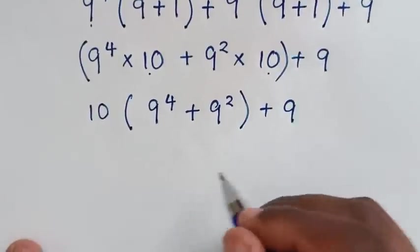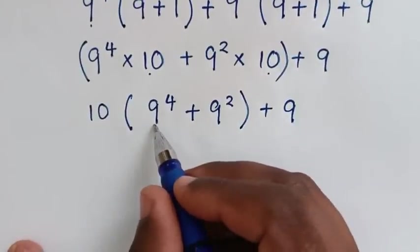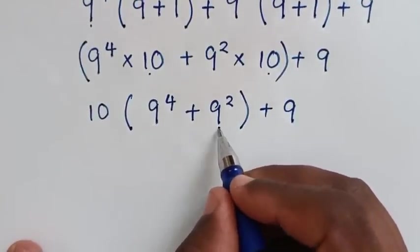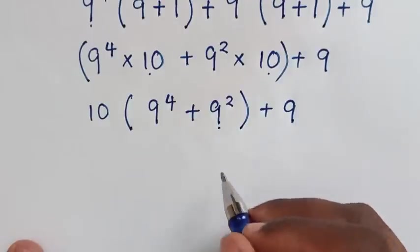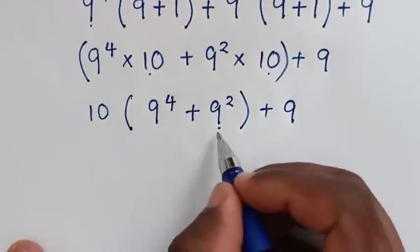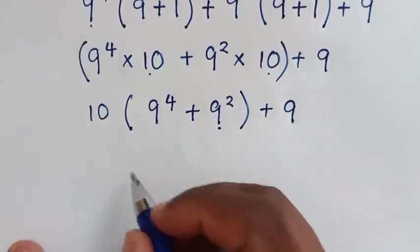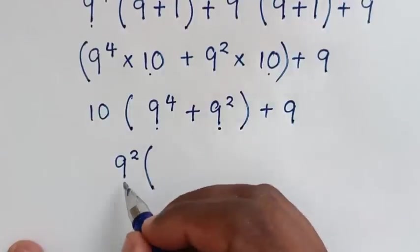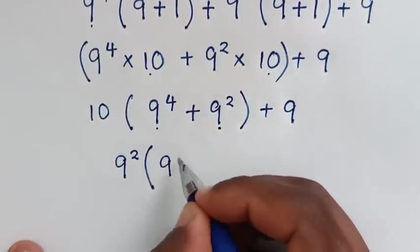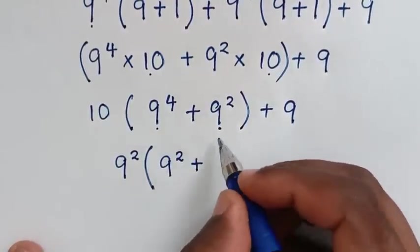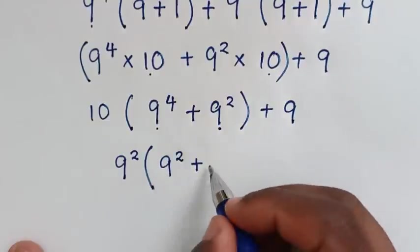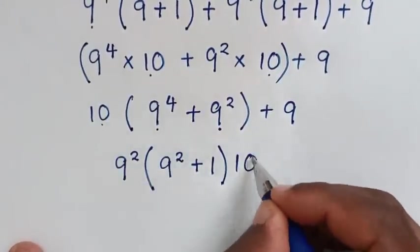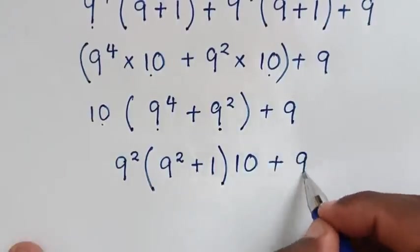Then in the next step, inside the bracket we have 9 power 4 plus 9 power 2, and 9 power 2 is common, so we'll take 9 power 2 out of the bracket. It will be 9 power 2 out of bracket: 9 power 4 divided by 9 power 2 is 9 power 2, then plus 9 power 2 divided by 9 power 2 is 1, bracket, then times 10, then plus 9.